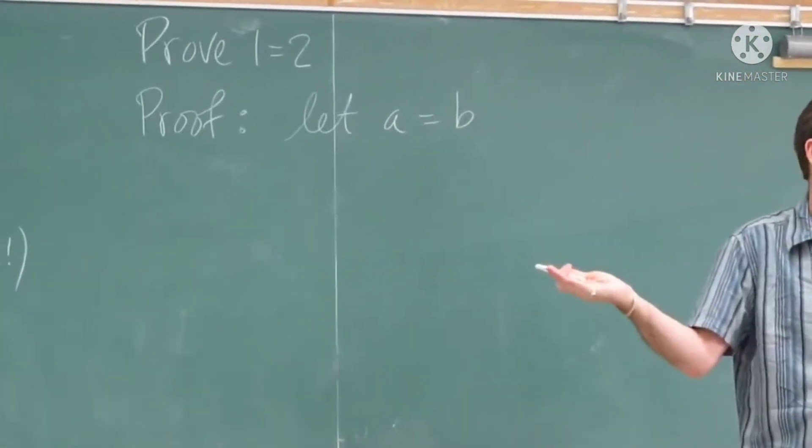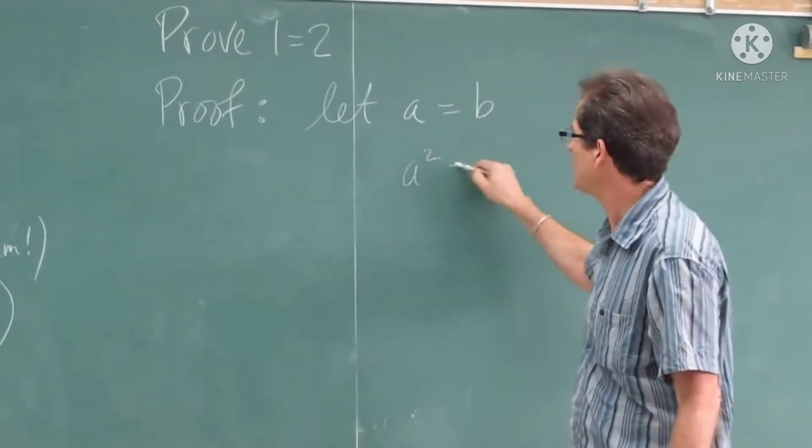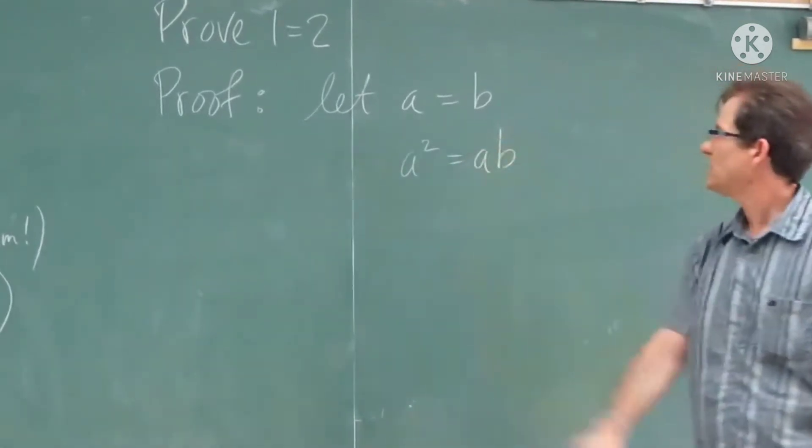Whatever A is, B is the same. Then, multiply both sides by A. You get A squared equals AB.